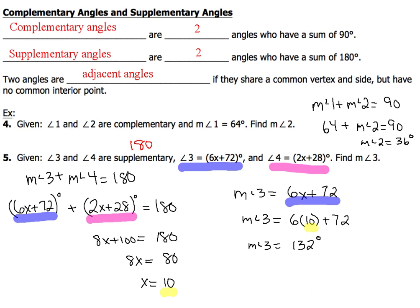Then, when we do the arithmetic, 6 times 10 is 60 plus 72. We end up with a total of 132 degrees for the measure of angle 3. Now,